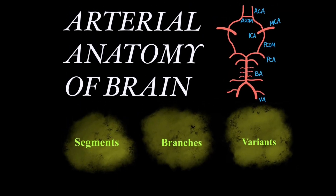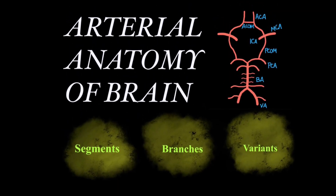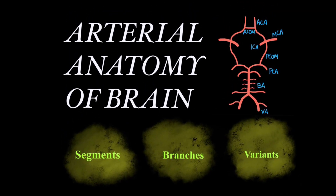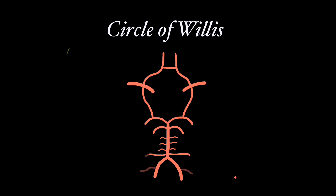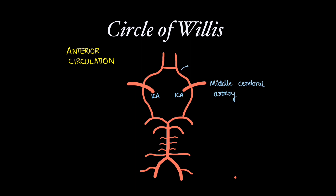Let's learn about arterial anatomy of the brain. Before moving on to the circle of Willis, let's draw the arteries which come in anterior and posterior circulation. The anterior circulation of the brain contains the internal carotid artery, which branches into the middle cerebral artery and anterior cerebral artery.